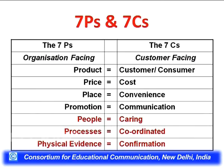We now have seven P's and seven C's. The seven P's are organization-facing and the seven C's are customer-facing: product/customer, price/cost, place/convenience, promotion/communication, people/caring, processes/coordinated, physical evidence/confirmation.